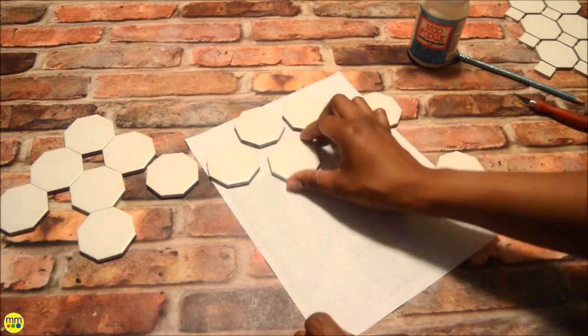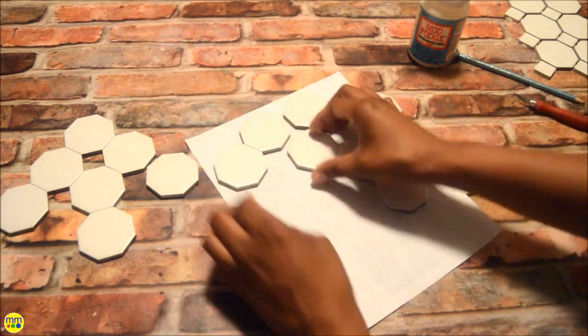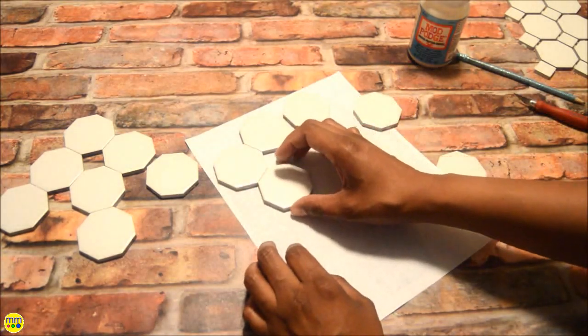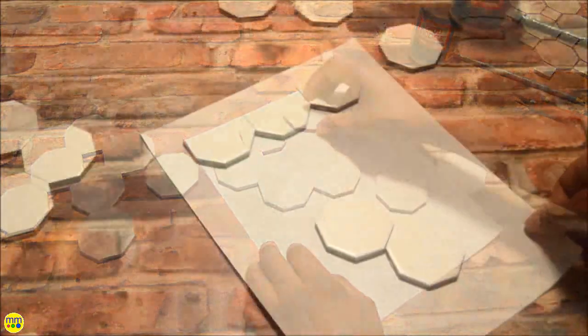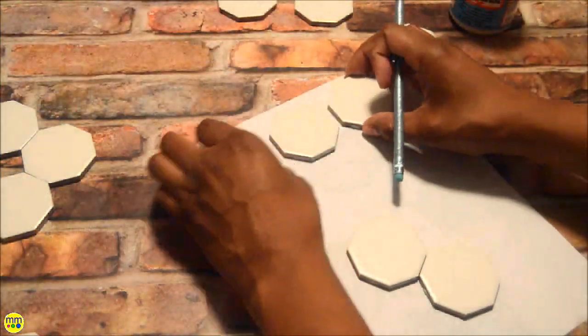Flip your photo face down and arrange the tiles on the back of the paper. Decide on the placement of the tiles and trace the outline. Continue until you have the majority of the photo done.